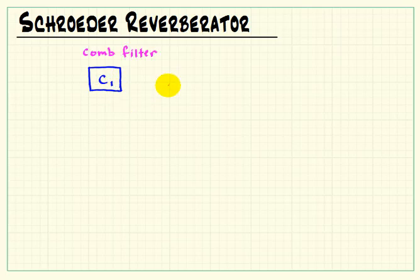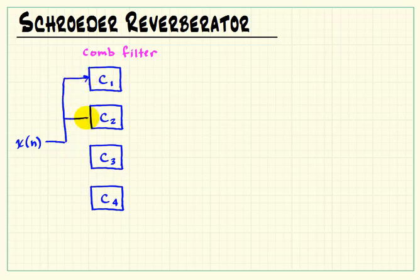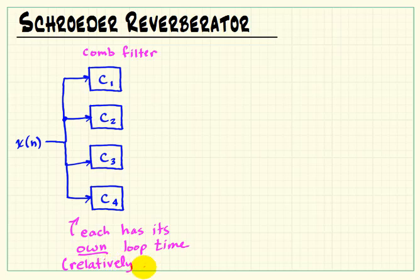The Schrader reverberator begins with a number of comb filters — I'll call these C1 through C4 — and each comb filter has its own loop time. That allows each of the comb filters to generate its own series of impulses, and since loop time controls the spacing, we can start to get more pulses that are not necessarily spaced at some very predictable interval. We can maximize the non-overlap of the comb filter impulses if we select these loop times to be relatively prime numbers.